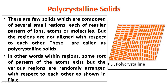The third category is polycrystalline solids. As seen in the picture, there are regions in it — each region has its elements aligned in a particular fashion, but the regions are randomly placed with respect to each other. Since there are multiple small crystals, it is called polycrystalline. Within regions, some pattern of atoms exists, but the various regions are randomly arranged with respect to each other, as shown in figure C.